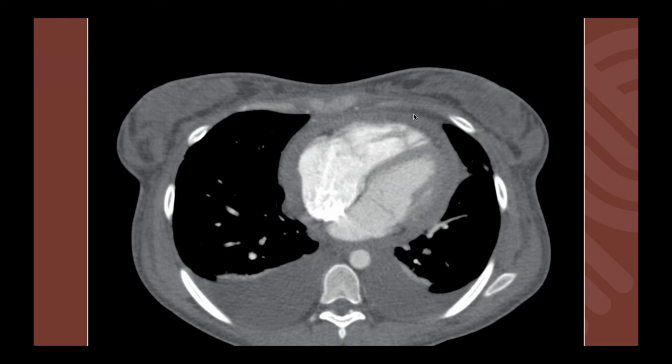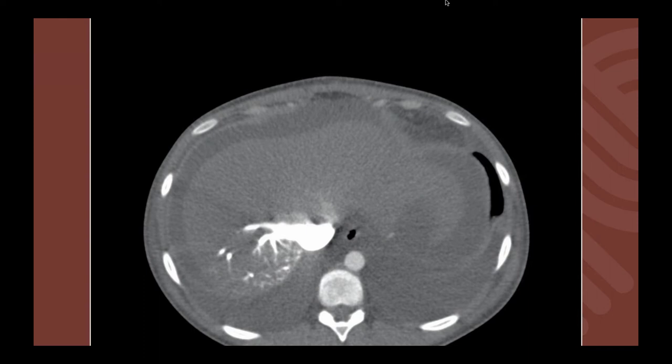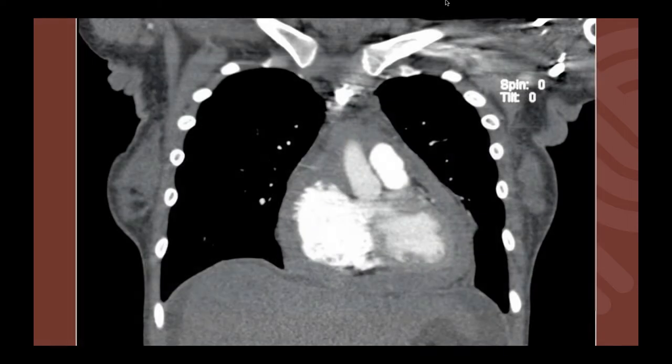CT of the chest with contrast performed at our institution shows bilateral pleural effusions and pericardial effusions in this very young woman. Looking further down in the abdomen, we see refluxing of very dense contrast into the IVC and hepatic veins, which indicates increased pressures in the atria — some reflux into the IVC. The same findings are seen in the coronal plane.